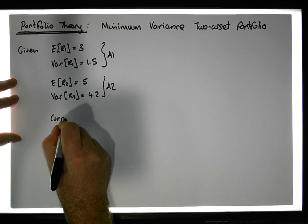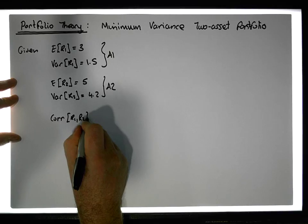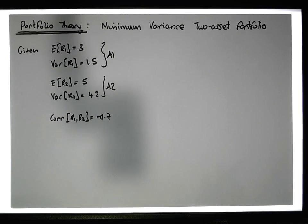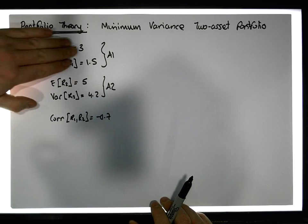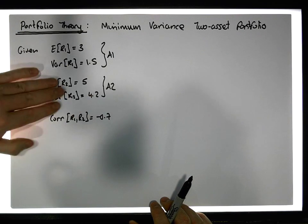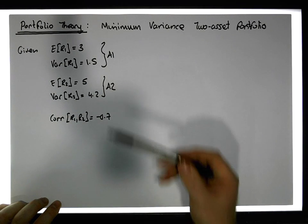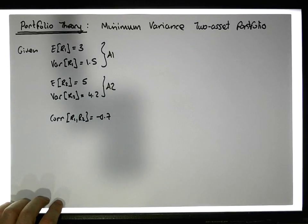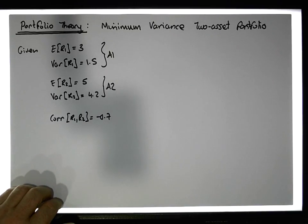The correlation between the returns of asset one and asset two is equal to minus 0.7. What we'd like to do is create a two-asset portfolio — a mixture of asset one and asset two — and figure out the actual mixture that will give us a minimum overall variance for the portfolio. There are a number of formulas we can use to calculate this.